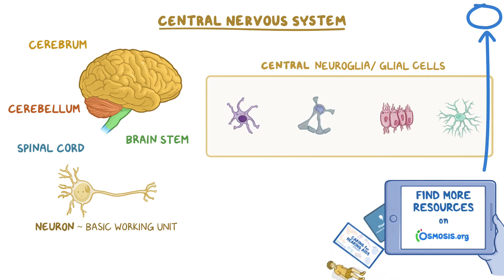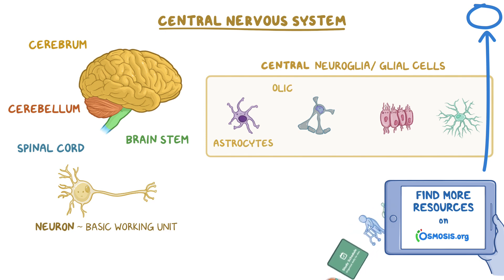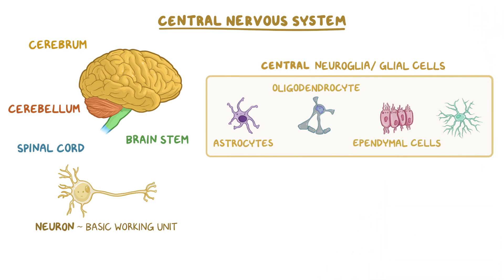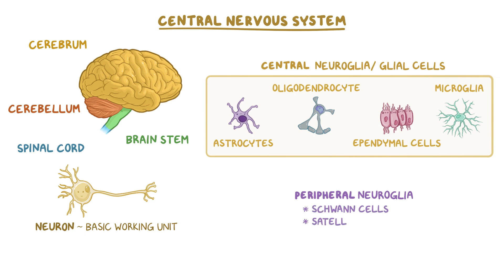The central neuroglia includes astrocytes, oligodendrocytes, ependymal cells, and microglia. The peripheral neuroglia includes Schwann cells, satellite cells, and a number of cells associated with specific organs.